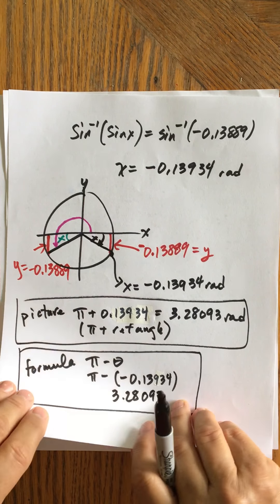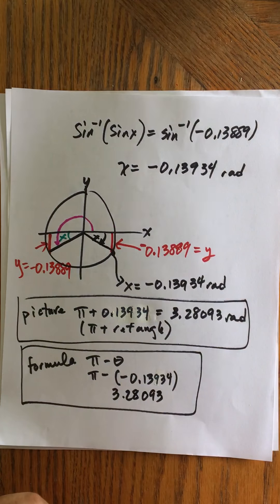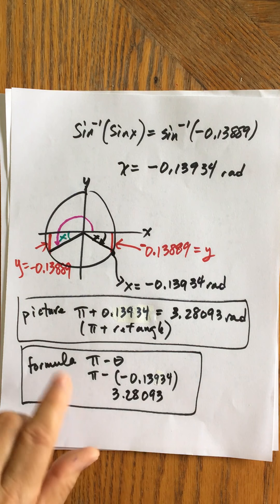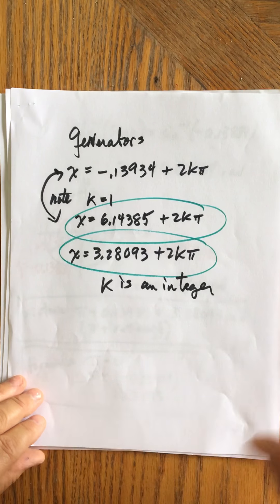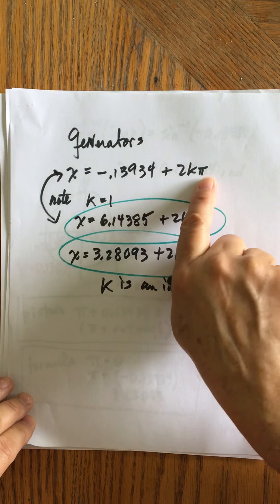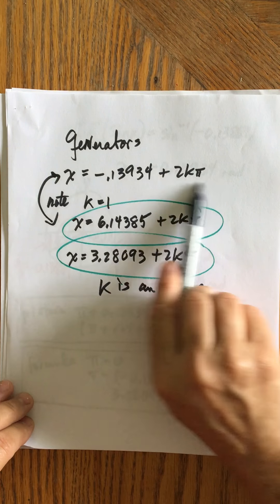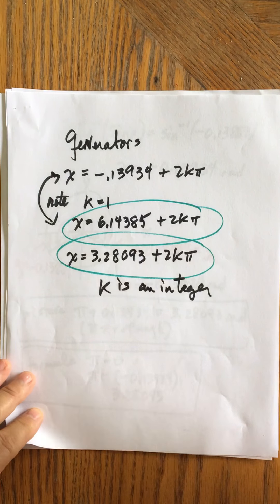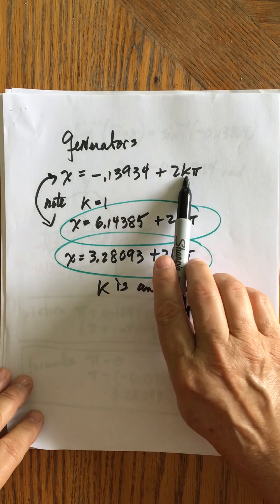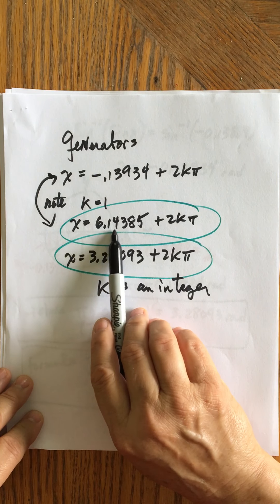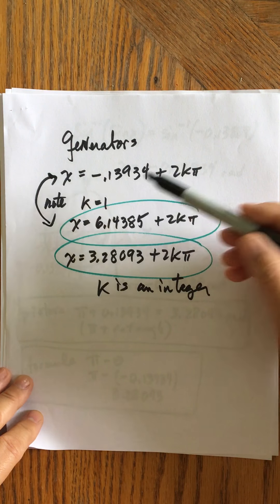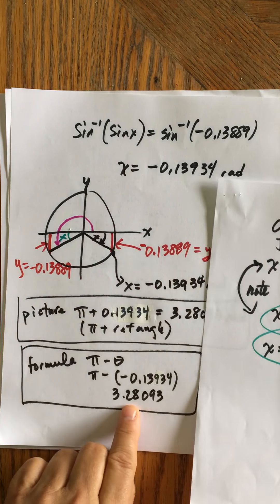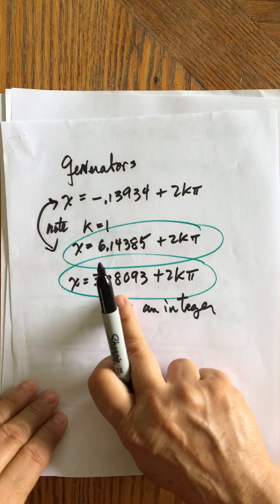So what that means is I now have two generators, and let's see. Let me actually have that worked out. I do. So now what we have of the two generators, we have the negative 0.13934 plus 2k pi, or most books, although this is absolutely correct, and there's nothing wrong with this, most books don't really like negative angles. I don't know why. But if you let k be 1 here, where k is an integer, then you'll get 6.14385. And either one, they're just coterminal angles, and then plus 2k pi will capture all those solutions. And then, of course, you've got your other 3.28093 plus 2k pi.